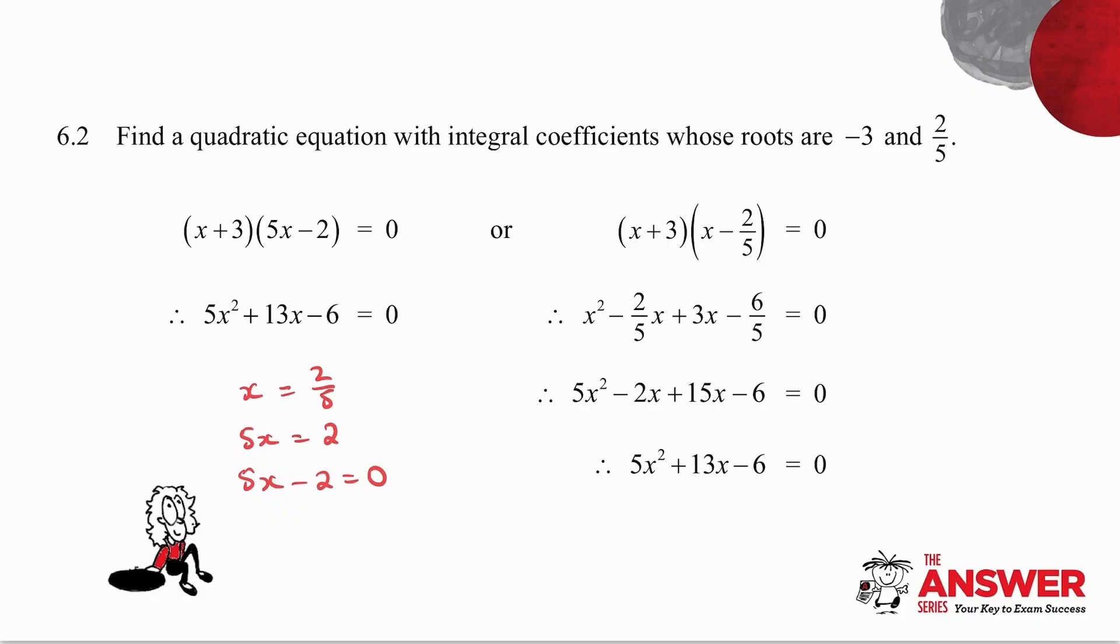If you're not confident with doing it that way, I can do it slightly differently. The minus three obviously comes from a bracket with x plus three, but the two fifths must come from a bracket with x minus two fifths. Because if x minus two fifths equals zero, then x is equal to two over five. Multiply these brackets together and you get the following.